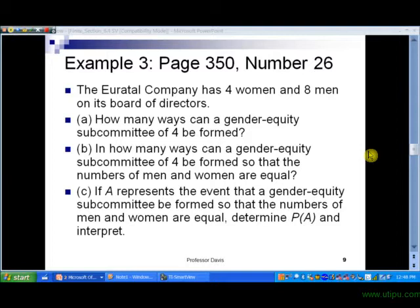And there's three parts to this problem. Part A, how many ways can a gender equity committee of four be formed? In part B, how many ways can a gender equity committee subcommittee of four be formed so that the numbers of men and women are equal?